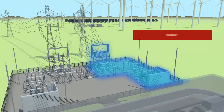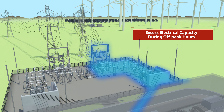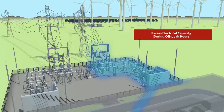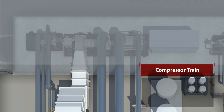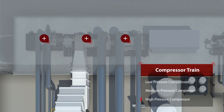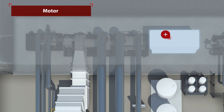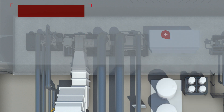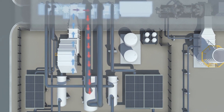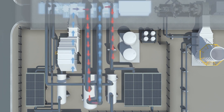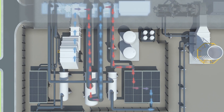Here's how it works. Excess capacity during off-peak hours is used to drive a series of air compressors. In this three-phase design, the air is cooled between each compressor.